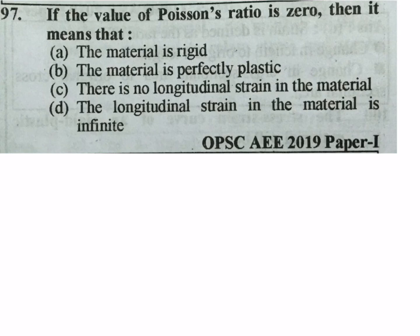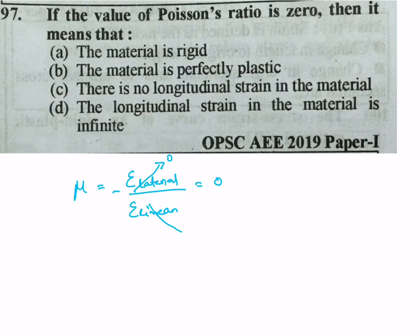If the value of Poisson's ratio is 0, it means μ = lateral strain divided by linear strain equals zero. This means either lateral strain is zero or linear strain is infinity.